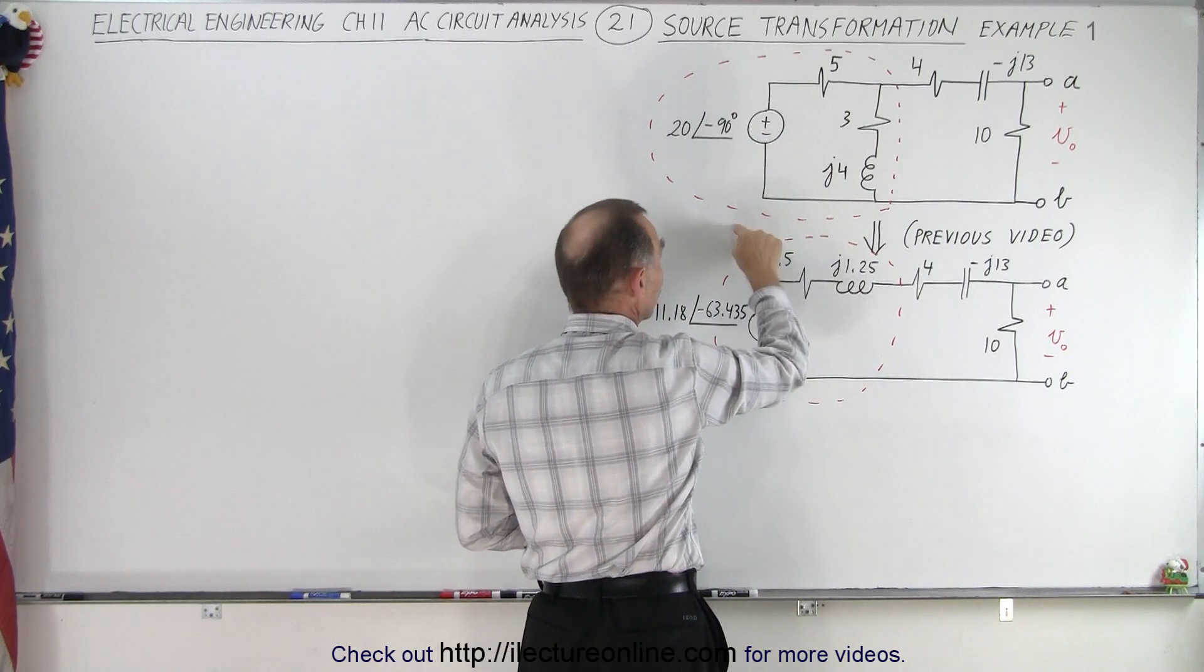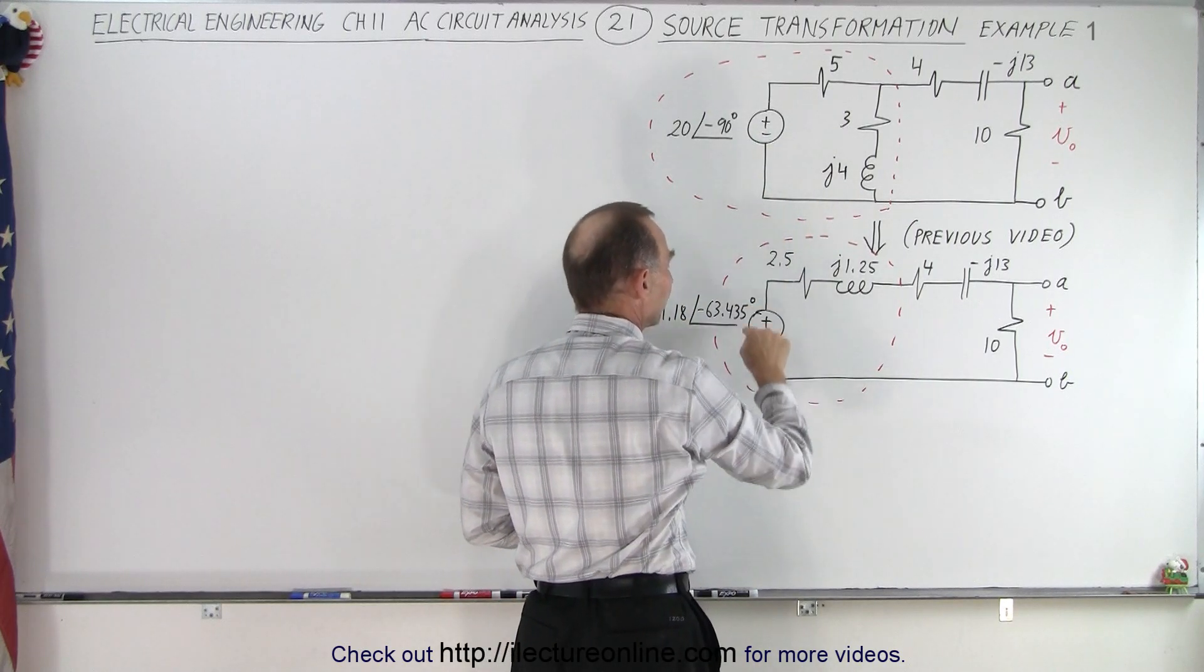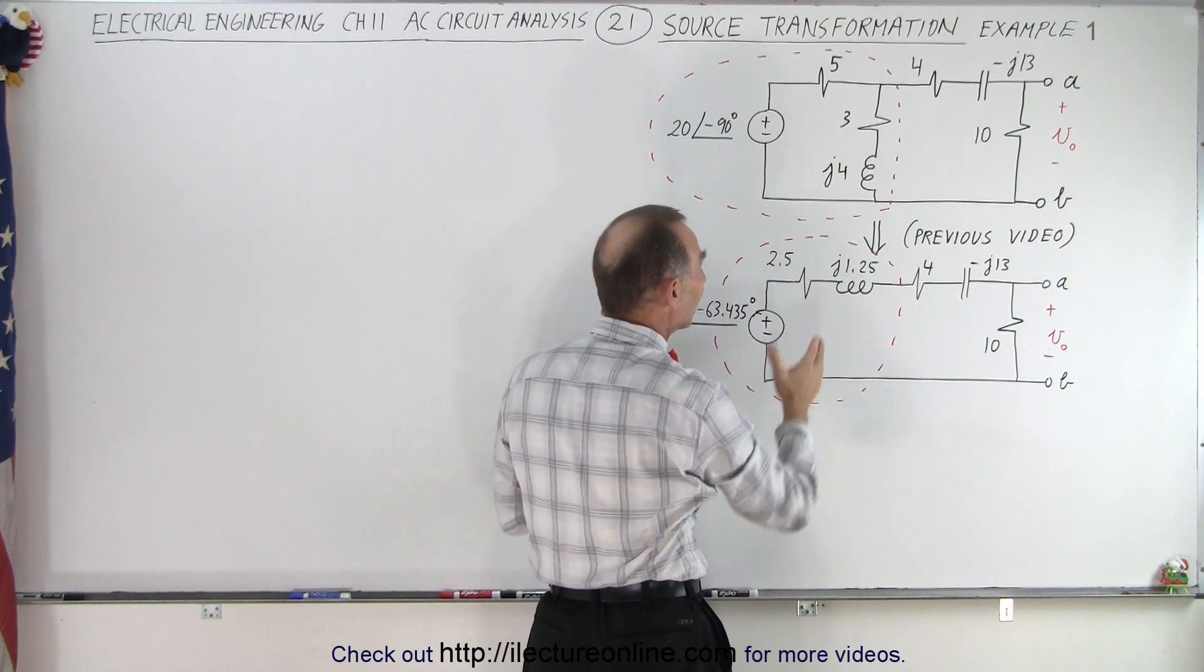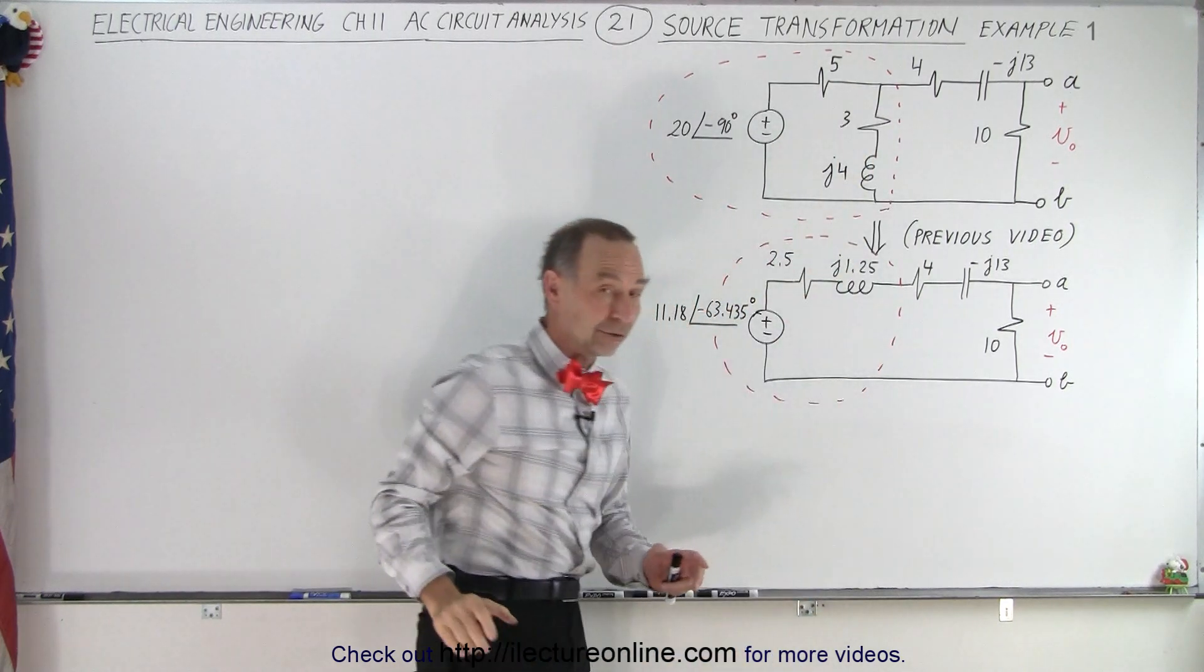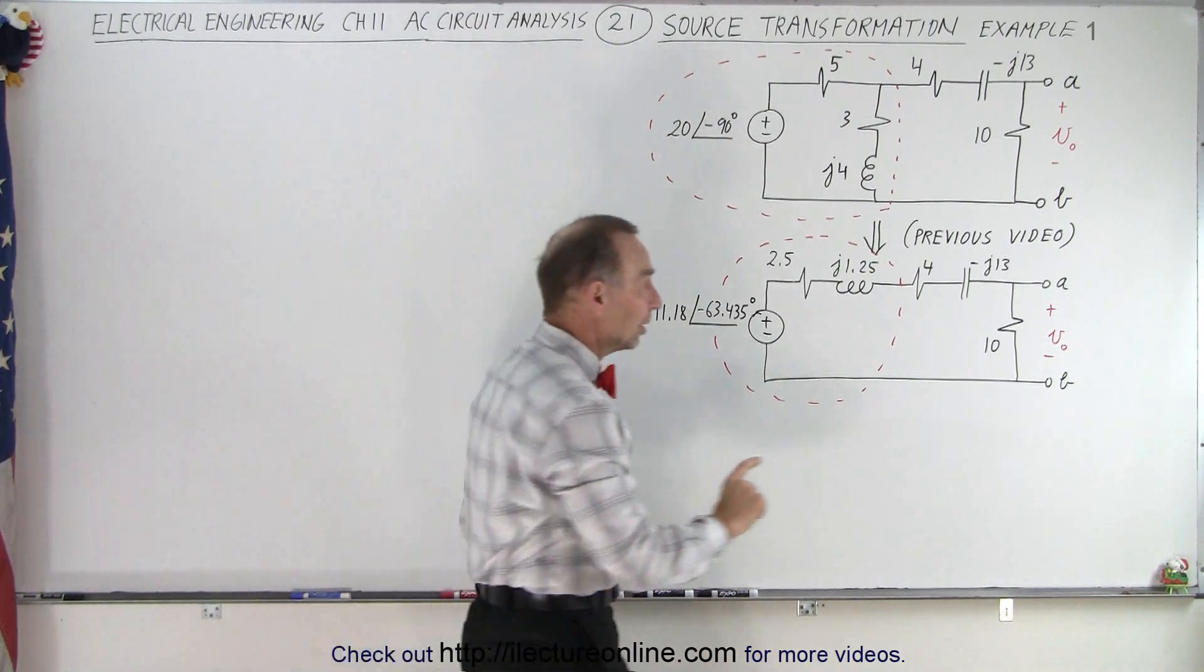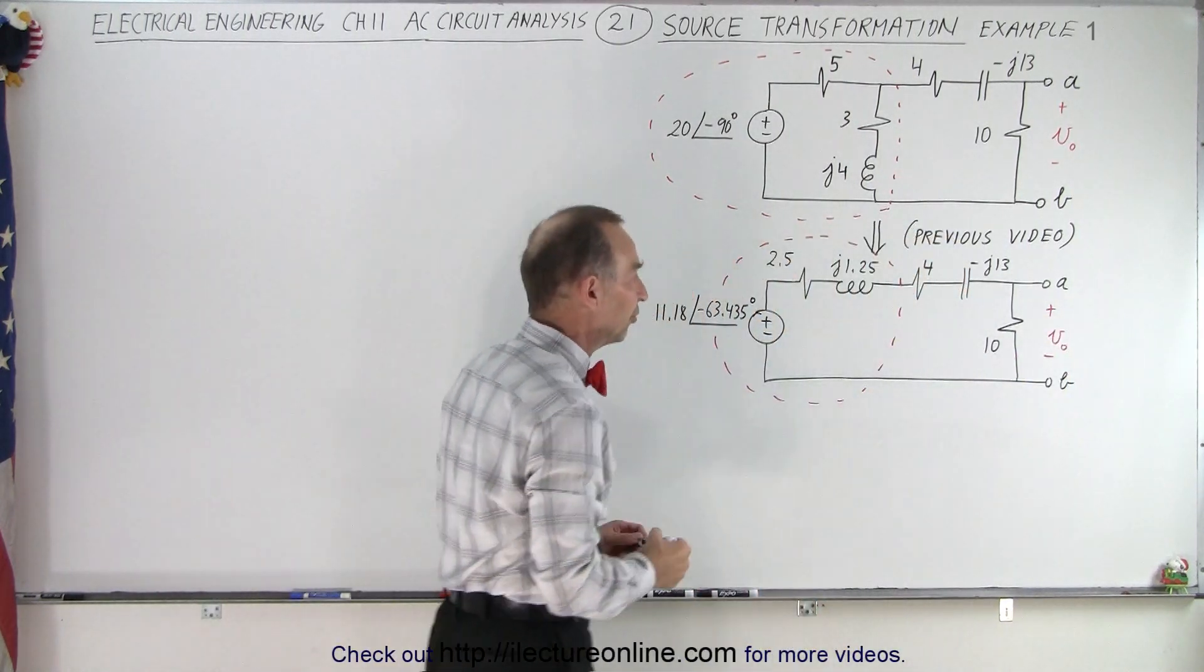We first changed this into a current source and now from the current source back to the voltage source. In each case, we're able to simplify what looks like this into something that looks like this. And now, it is a lot easier to solve for the output voltage across that resistor.